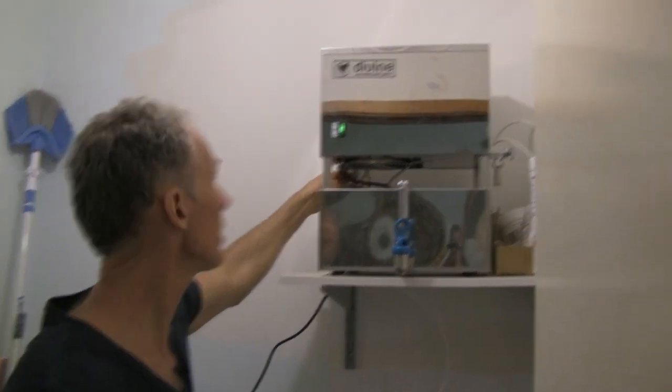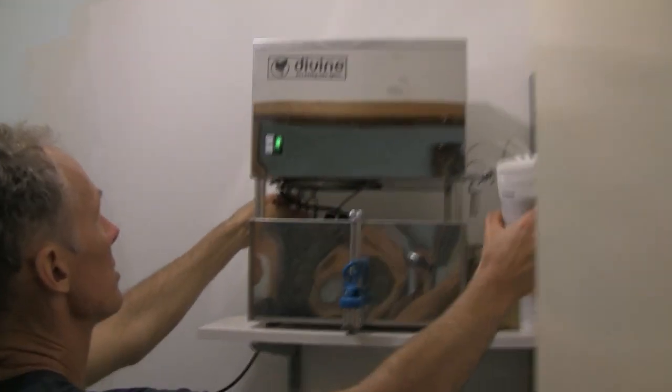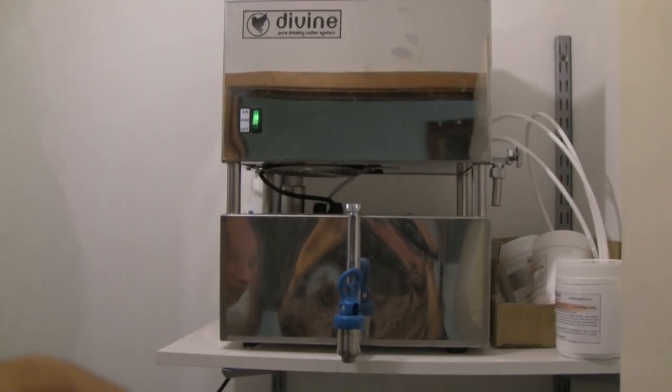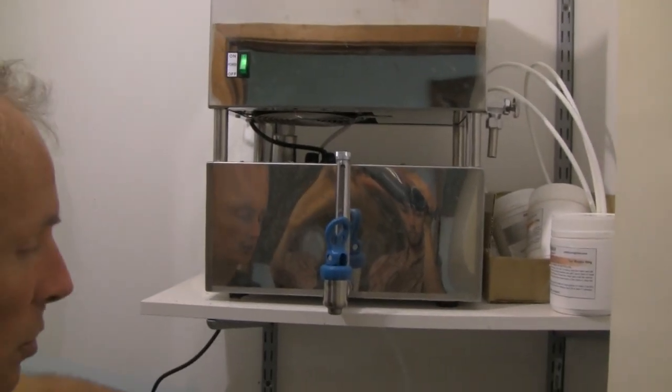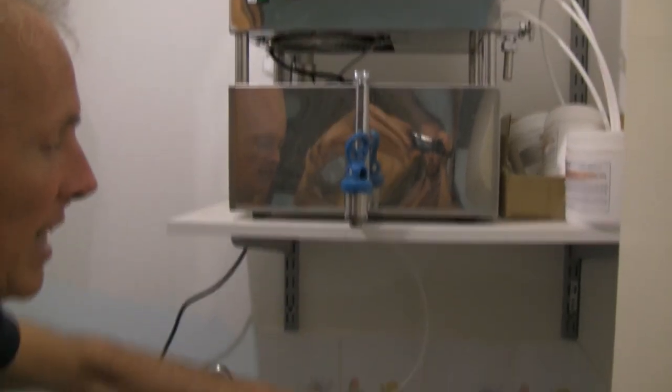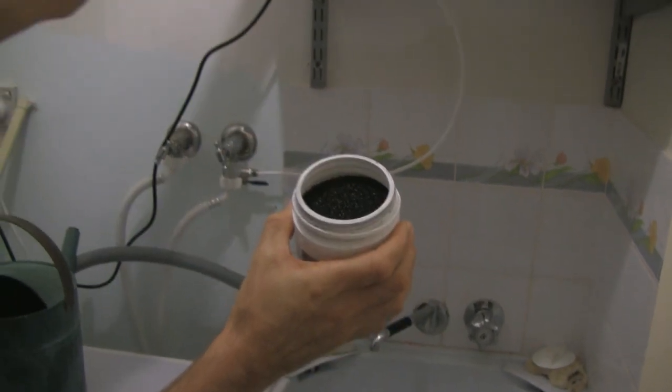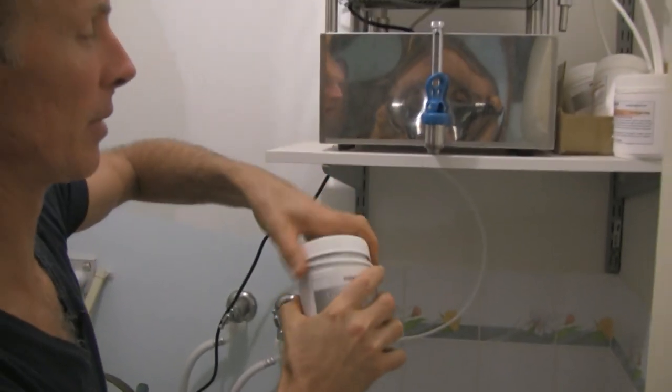And here we've got a charcoal filter, so basically it's just this little cylinder. We put charcoal in it, which makes it taste sweet again, because the distilled water tastes pretty much like nothing. The charcoal just adds a little sweetness. Pop that inside the little charcoal container up there.